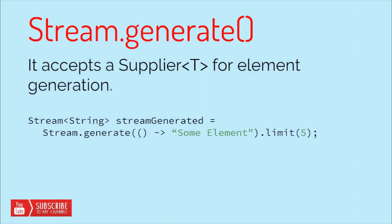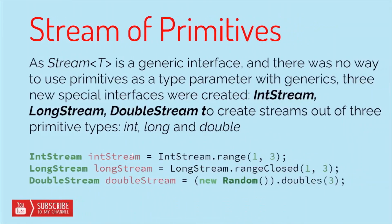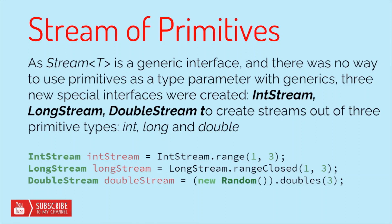The second one is Stream.generate. Suppose we want to generate a stream depending on some logic we define inside a lambda expression. Stream.generate accepts a Supplier for element generation, which we provide as a lambda expression. In this example, we generate a Stream of Strings using Stream.generate with a lambda returning a string element. I've added limit(5) at the end — without it, this would result in an infinite stream since there is no ending condition.